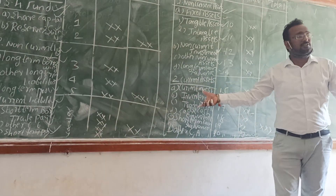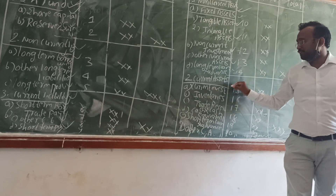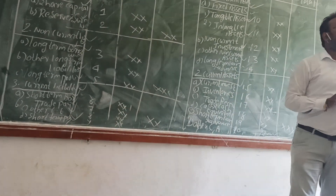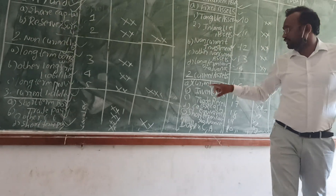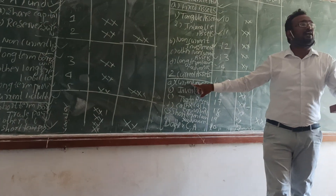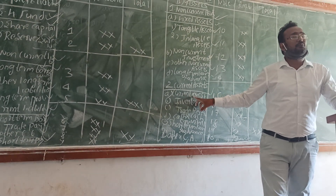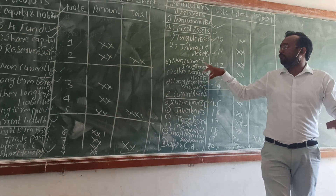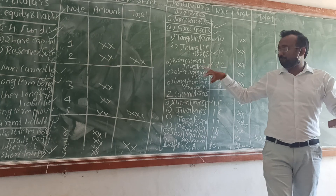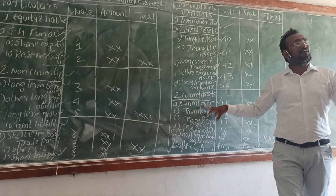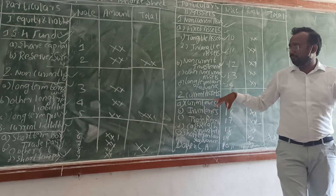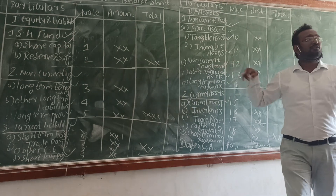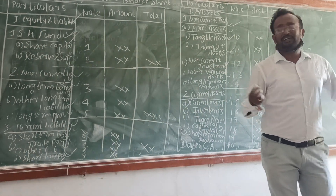The last part is current assets. In the case of current assets, the first one is called current investment, which is also called temporary investment. If non-current investment is given, temporary investment is not given. If temporary investment is given, non-current investment is not given.